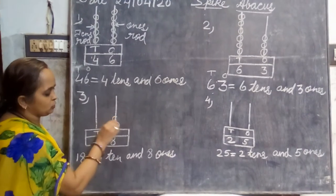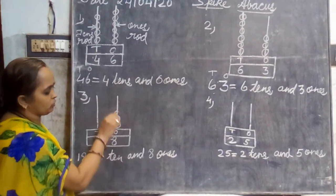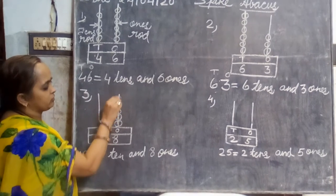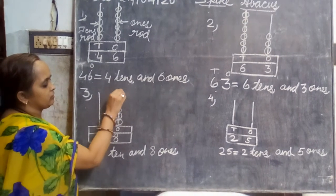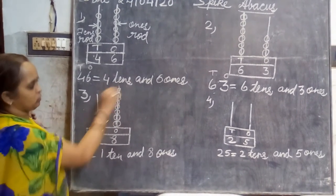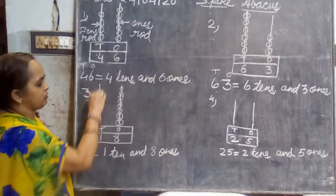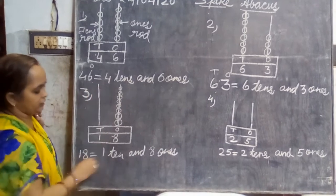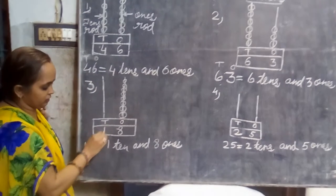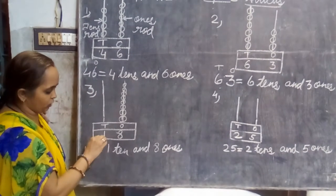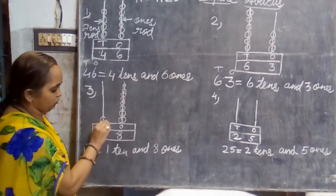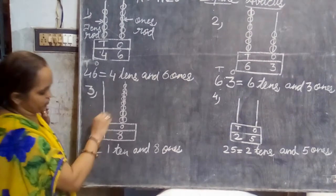One, two, three, four, five, six, seven and eight. Okay dear? And here at tens place, the number written is one. So we will draw only one spike. Okay?